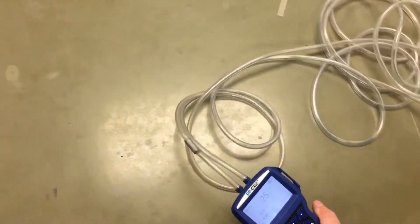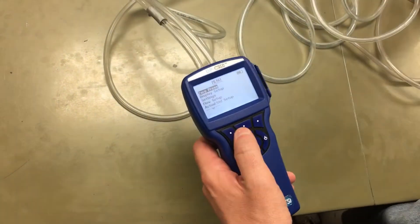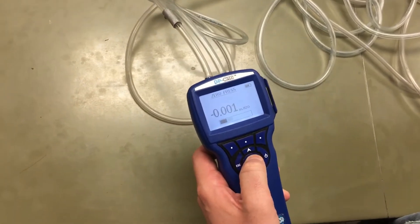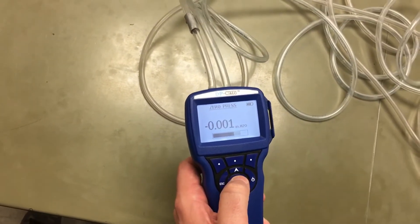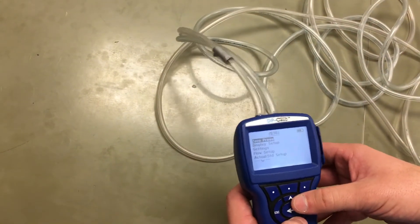Before we take our measurements, we need to make sure it's set up right, so we're going to go to the menu and zero the pressure. This sets the pressure of the ambient air that it's taking in right now as the zero point for our measurements.